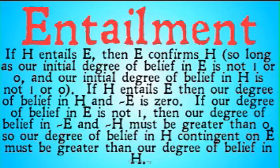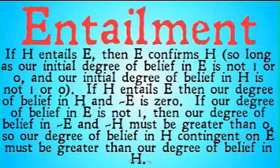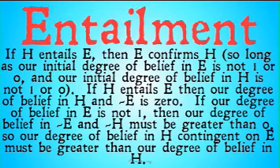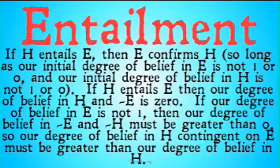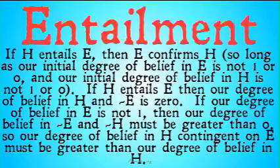A couple of caveats we'll examine near the end of the video: this works so long as our initial degree of belief in E is not 1 or 0, and our initial degree of belief in H is not 1 or 0. If H entails E, then translated into Bayesian language, our degree of belief in H and not-E is 0. If our degree of belief in E is not 1, then our degree of belief in not-E and not-H has to be greater than 0, so our degree of belief in H given E must be greater than our degree of belief in H. We'll look at some numbers to make this clearer.